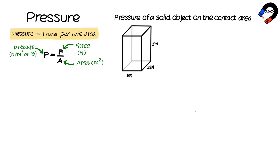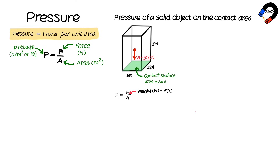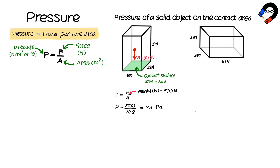A cuboid solid has dimensions of 3 meters, 2 meters, and 5 meters. It is laying on a contact surface and its weight of 500 newtons exerts on the contact surface area of 3 meters by 2 meters. The pressure is calculated using force divided by area: 500 divided by 3 times 2, which equals 83 pascals.